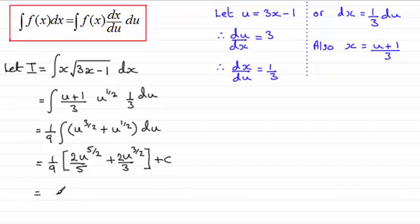Then what I want to do is just put the two fractions over the lowest common multiple. So of 5 and 3, that's going to be 15. So I multiply the 5 with 3 to get 15, so times the 2 by 3, and you get 6u to the power 5 over 2.